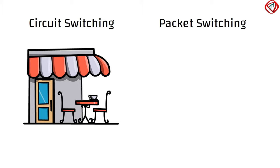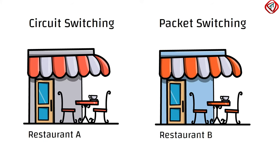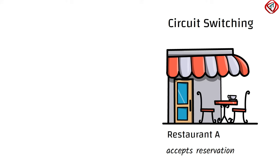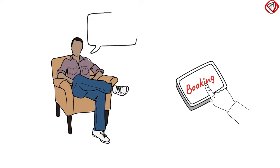Suppose there are two restaurants, A and B. Restaurant A accepts reservation, while Restaurant B does not. If I want to go to Restaurant A, I will have to book a table. So, when I arrive at the restaurant, I can immediately be seated and can order my meal.